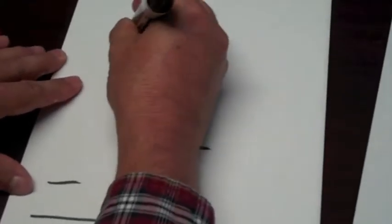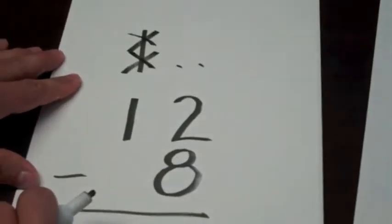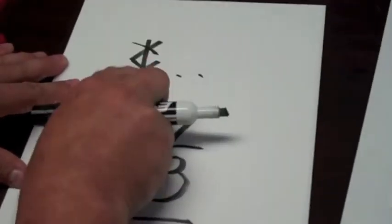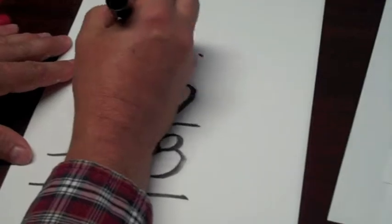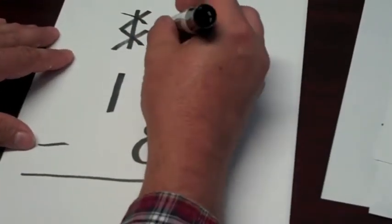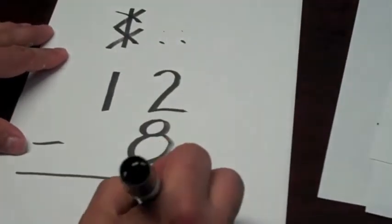I need to regroup from that ten-stick. If I take eight away, two will remain. Two and two will make a total of four.